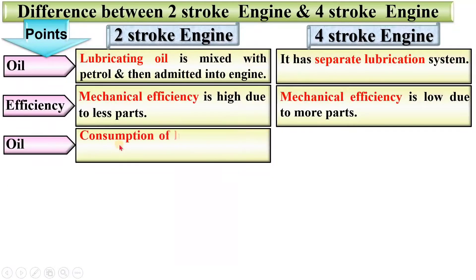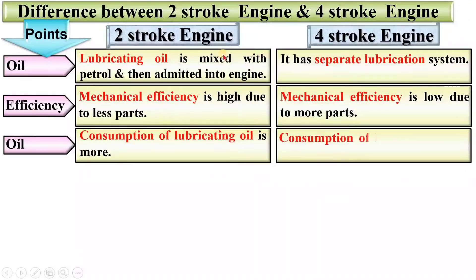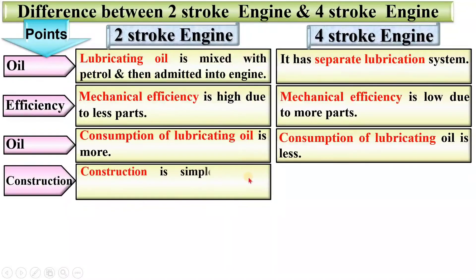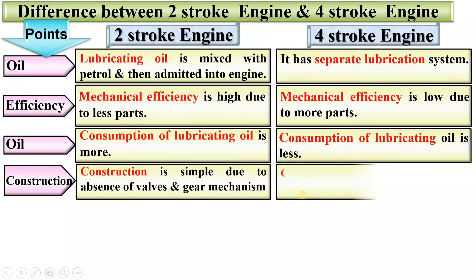Next point, oil consumption. Consumption of lubricating oil is more in the two-stroke engine because lubricating oil is mixed with the petrol. In a four-stroke engine, consumption of lubricating oil is less because it has a separate lubrication system. Next, construction. Construction is simple in a two-stroke engine due to the absence of valves and gear mechanism.